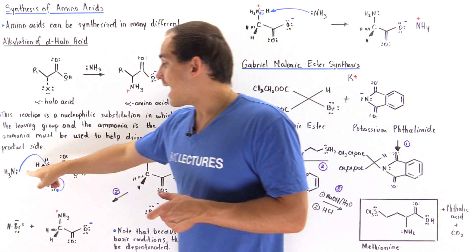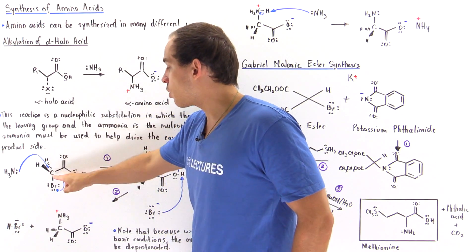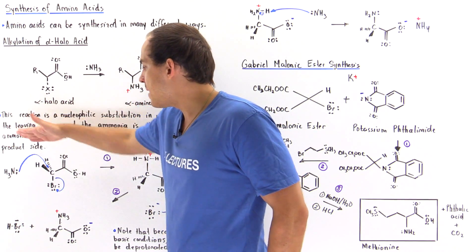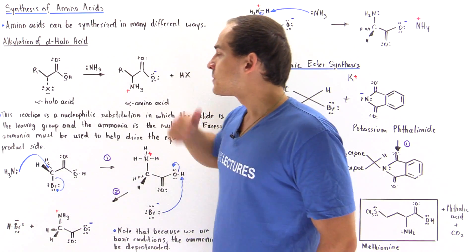The ammonia will act as a nucleophile and create a bond between the nitrogen and our carbon, attacking from the backside, displacing this leaving group, our halogen.